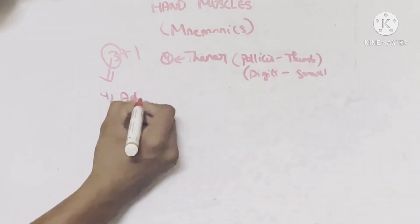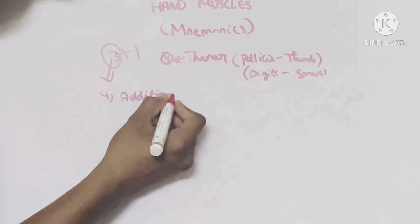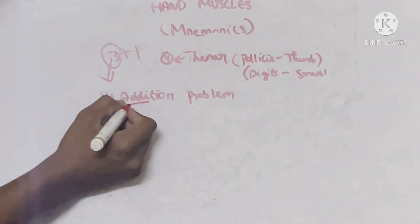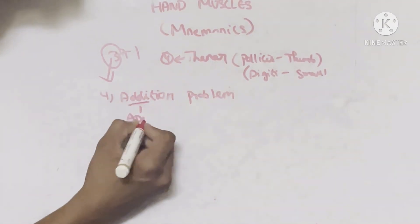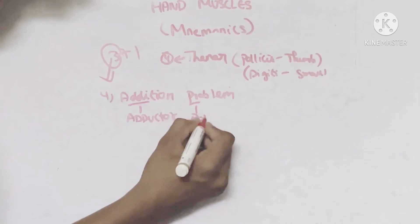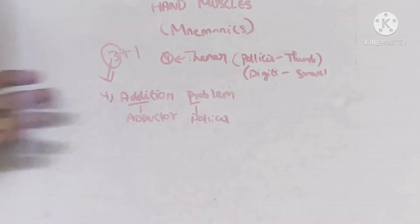So the last muscle is, just remember this sentence: 'Addition problem.' So addition here stands for adductor, P stands for pollicis. So these are the four muscles present on thenar.